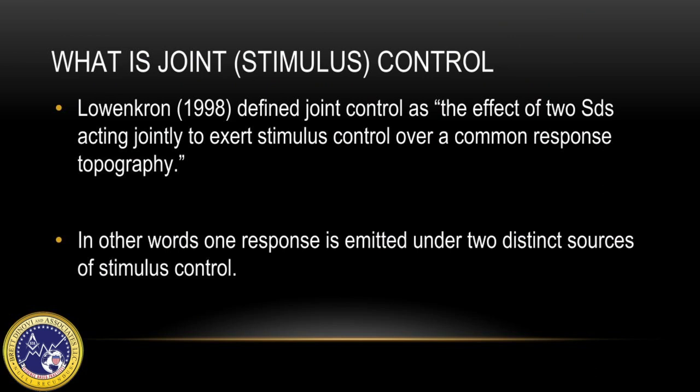Lohan Krohn in his 1998 article defined joint control as the effect of two SDs acting jointly to exert stimulus control over a common response topography. An easy way to think about joint control without worrying about all the technical jargon is to focus on it like this: if you are going to engage in a behavior that can only happen based off of two very specific things, then that behavior is under joint control.